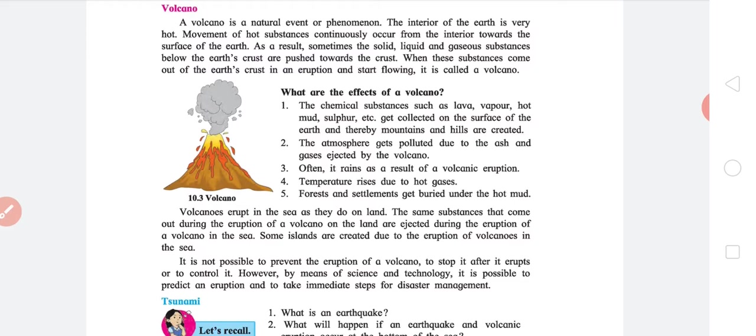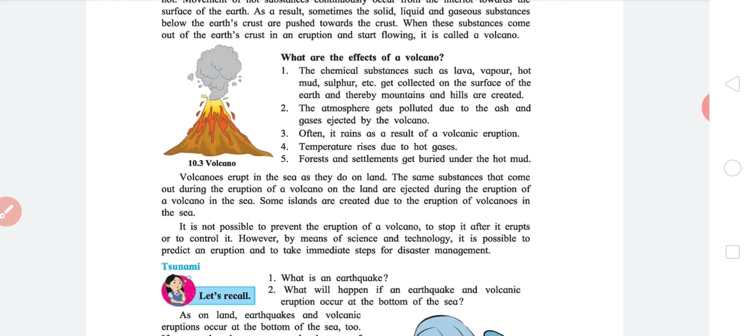Two, the atmosphere gets polluted due to ash and gases ejected by the volcano. This is not a good thing to be honest. I think about five to six years back, a volcano in Iceland erupted and as a result it disturbed all the flight operations. Three, often it rains as a result of volcanic eruption. I don't know the reason for that, but yeah this happens. Fourth, temperature rises due to hot gas. This is self-explanatory.